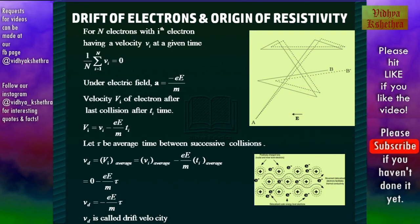Now for N electrons with ith electron having a velocity vi at a given time, it is seen that the average velocity is 0. That is 1/N Σ(i=1 to N) vi = 0.